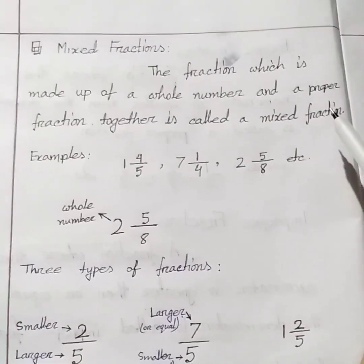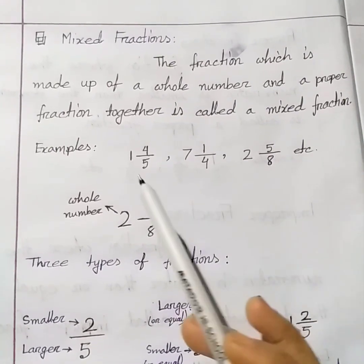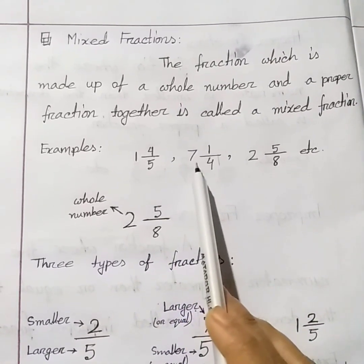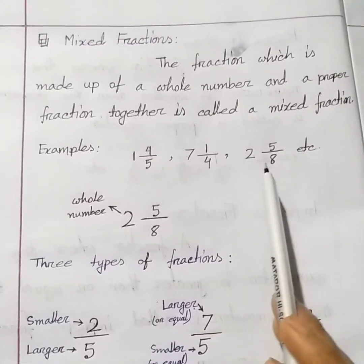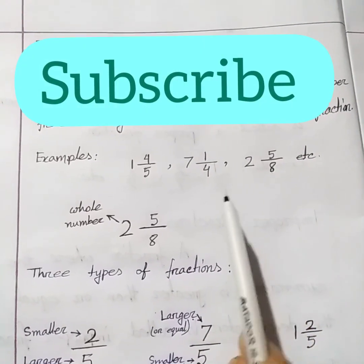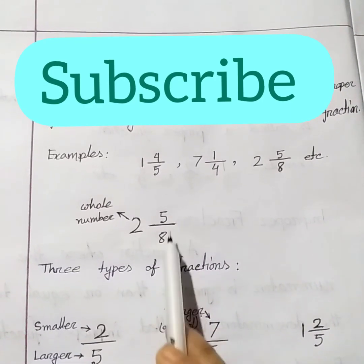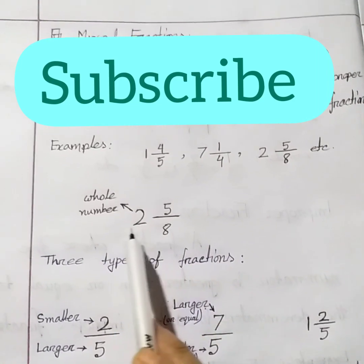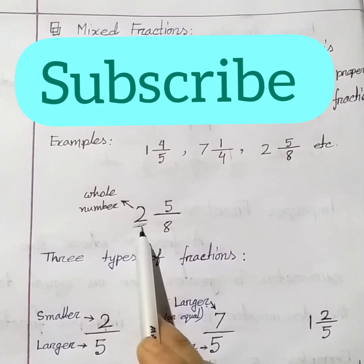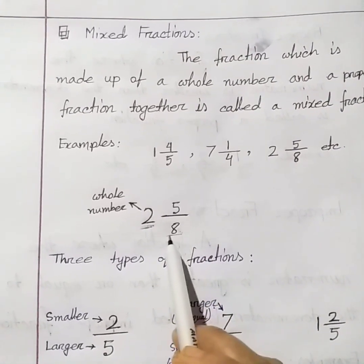These are all improper fractions. A mixed fraction is a fraction which is made up of a whole number and a proper fraction together. For examples, 1 whole 4 by 5, 7 whole 1 by 4, and 2 whole 5 by 8 are mixed fractions. Here, 2 whole 5 by 8 is a mixed fraction where 2 is the whole number — the integer part — and 5 by 8 is a proper fraction.